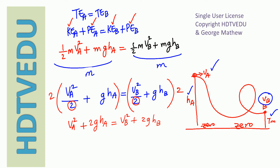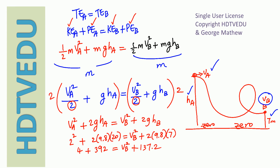Speed at point A is 2, so 2 squared; 2 times 9.8 times height of point A which is 20 meters; speed at B we don't know, squared; plus 2 times 9.8 times 7, since height of point B is 7. Solve for v_B squared and take the square root — the only unknown is v_B squared.